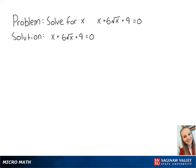For this problem, we want to solve for x in the equation x plus 6 times the square root of x plus 9 equals 0.